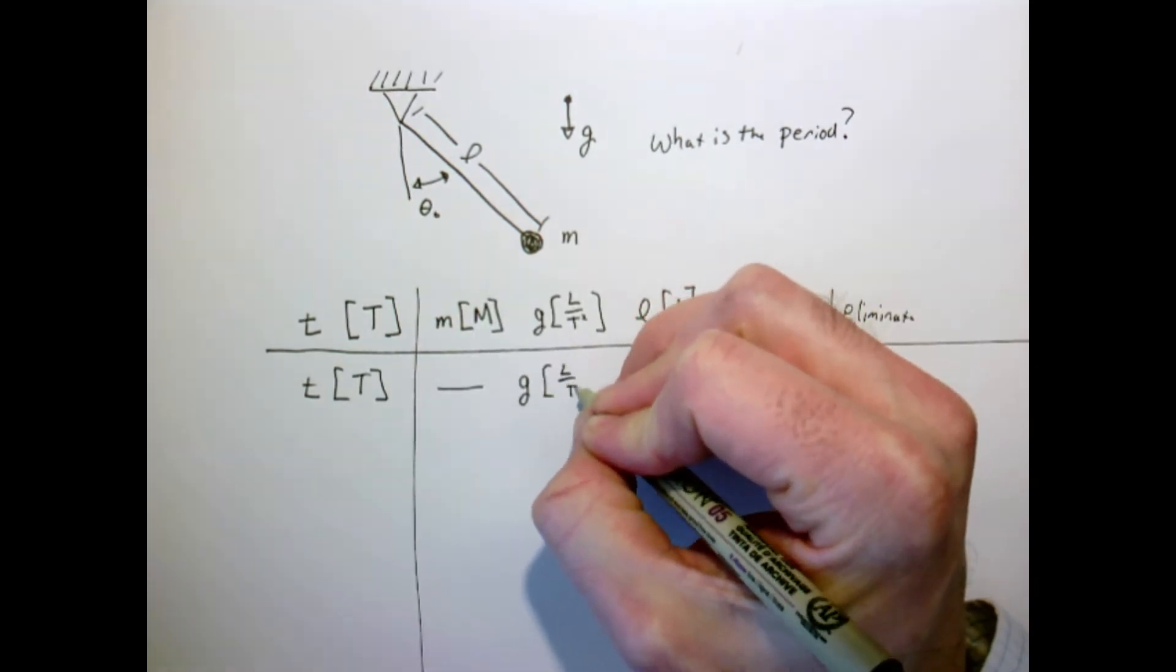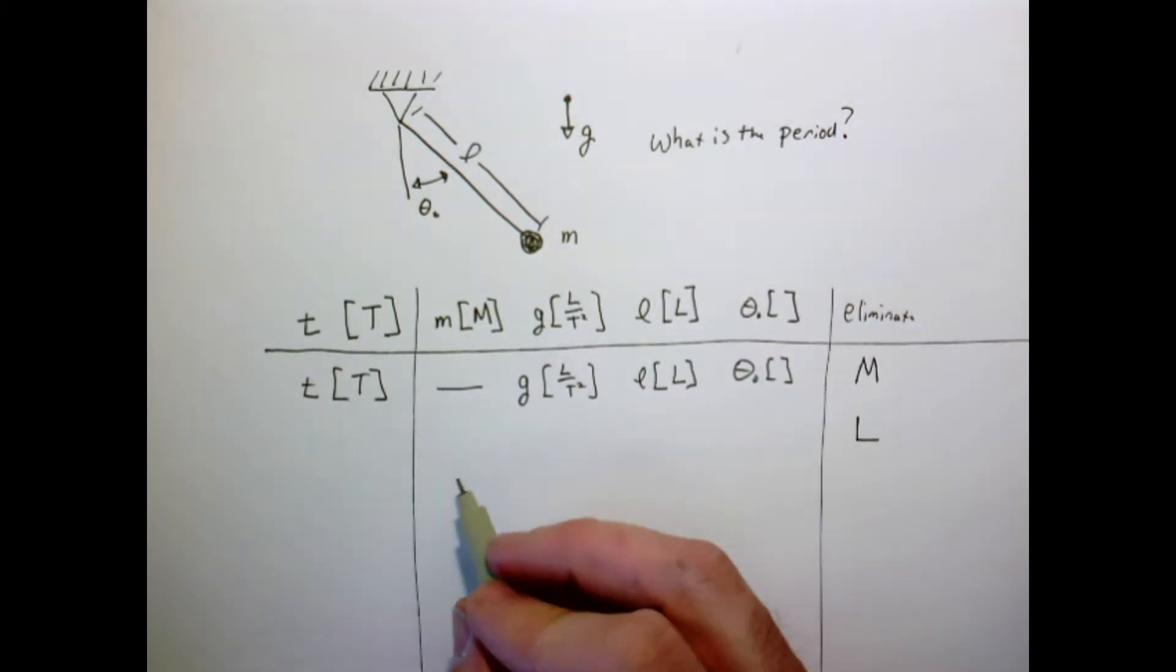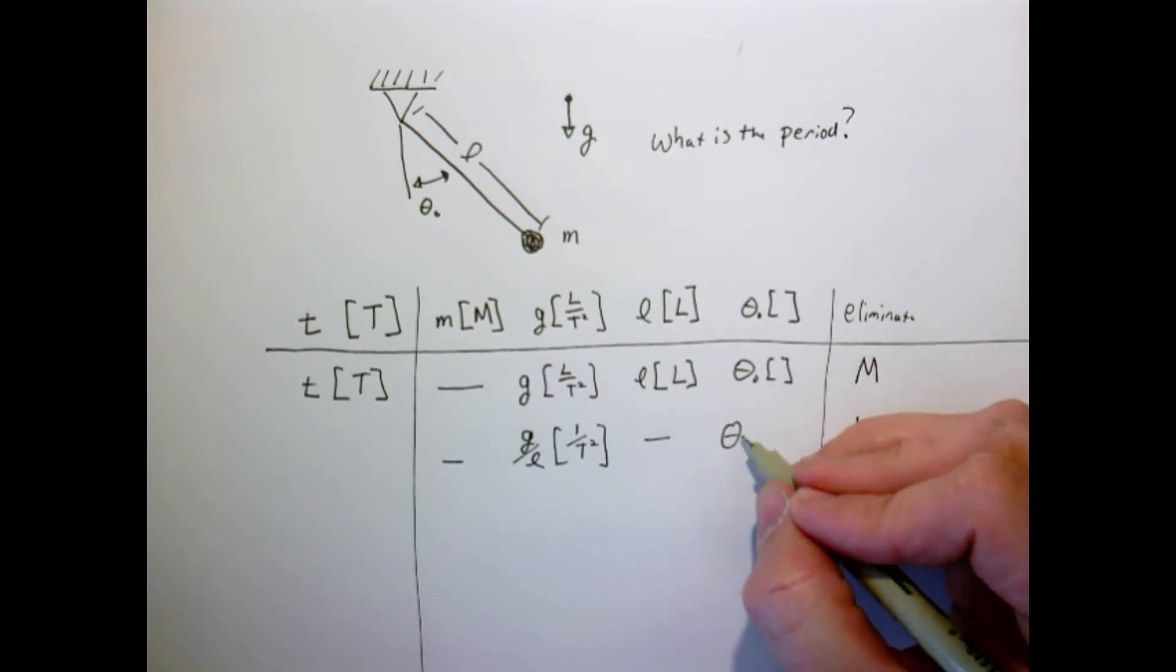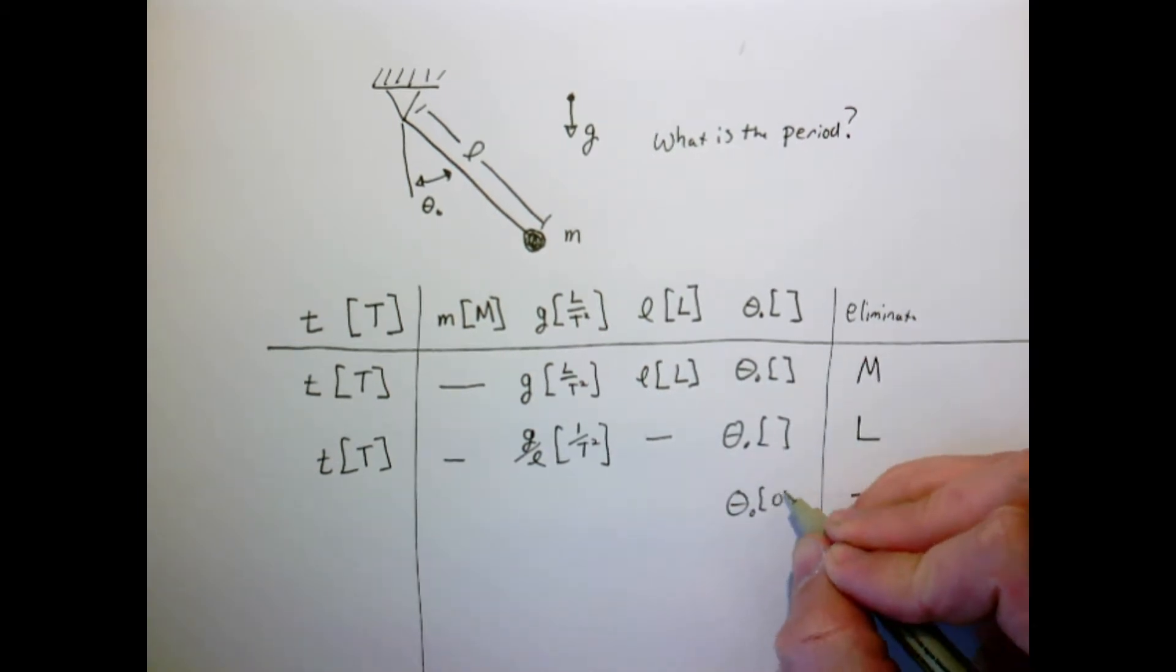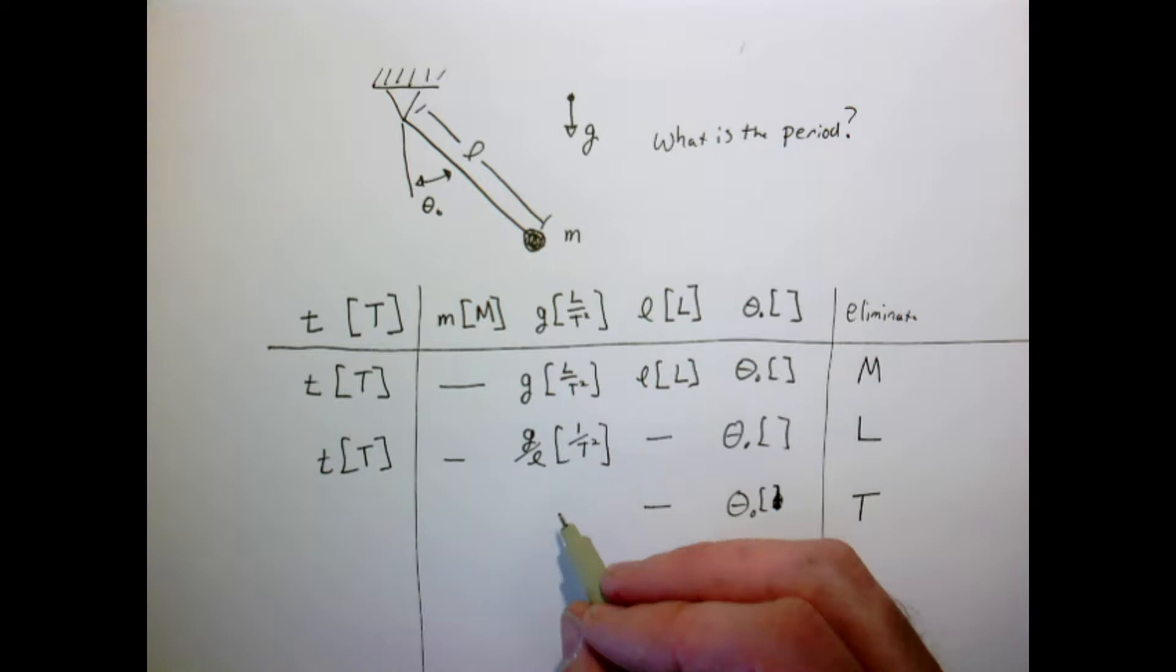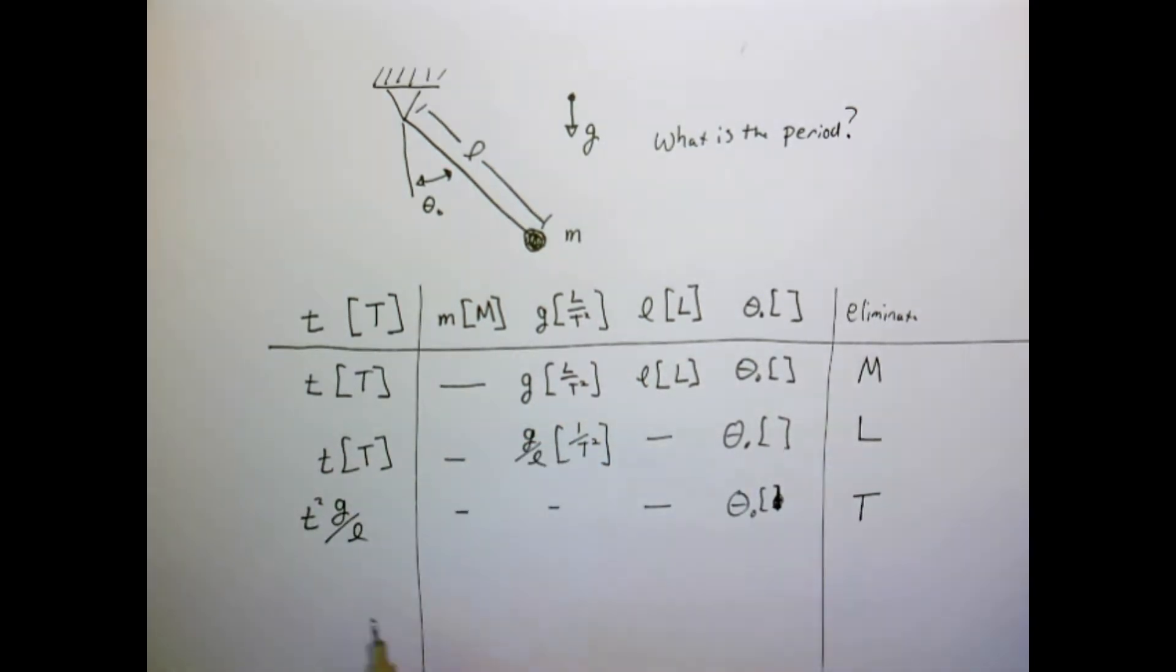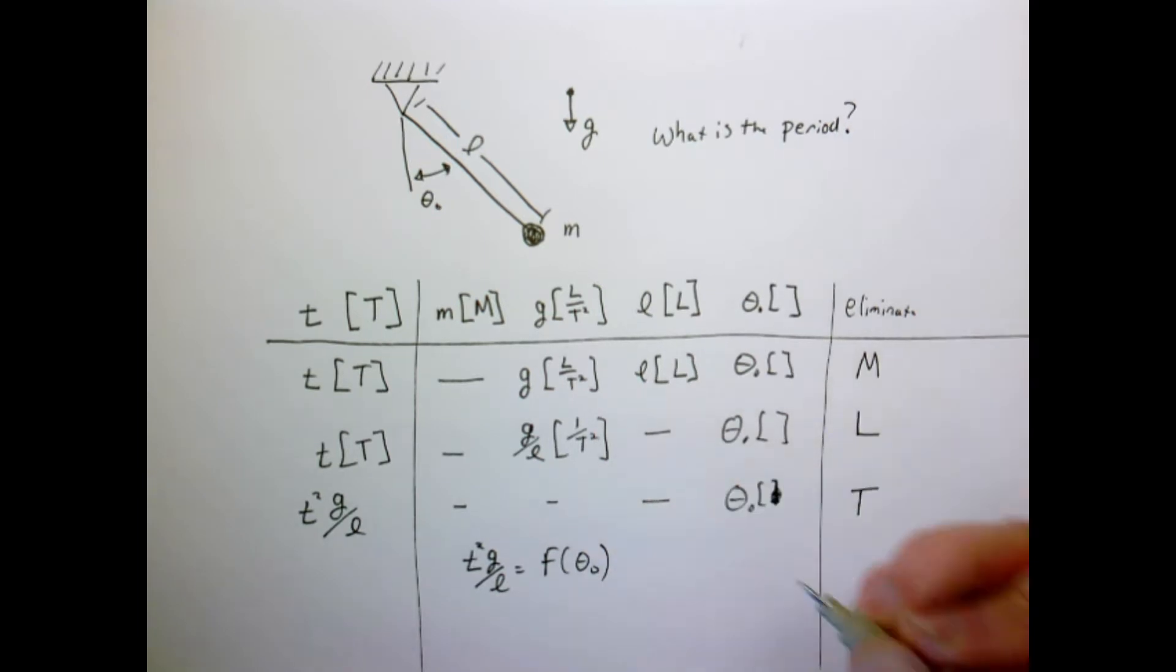So that tells us something quite simple right from the start, which you might have already guessed or known, which is the mass of the pendulum does not influence the period. And we can see that simply from the units, because there's no way for me to remove m from the problem. So we've gotten rid of one parameter. So now we're down to four things, the period as a function of gravity, length, and initial angle. Let's eliminate length. So I can form the ratio g over l, which would have units 1 over T squared. I remove l from the table. Now I've removed length from the problem.